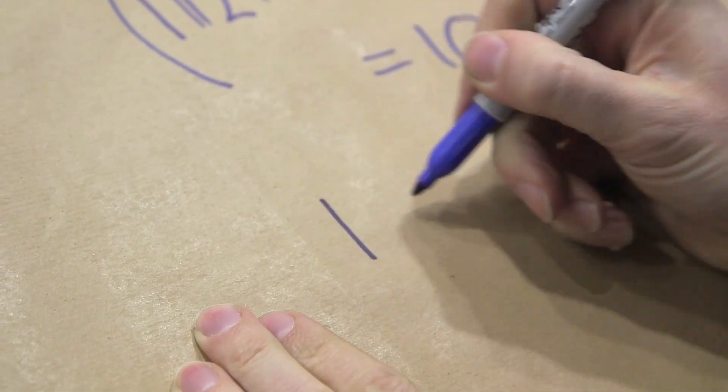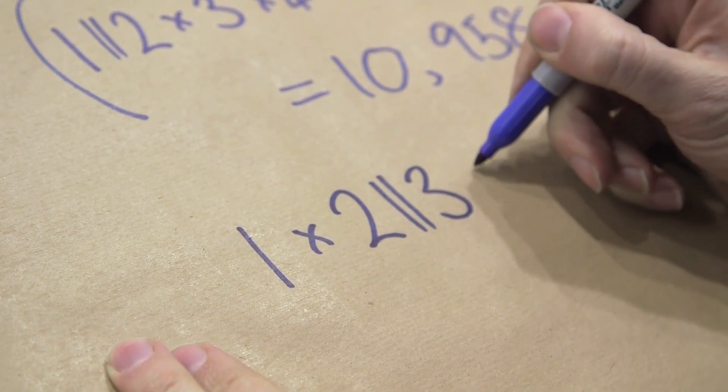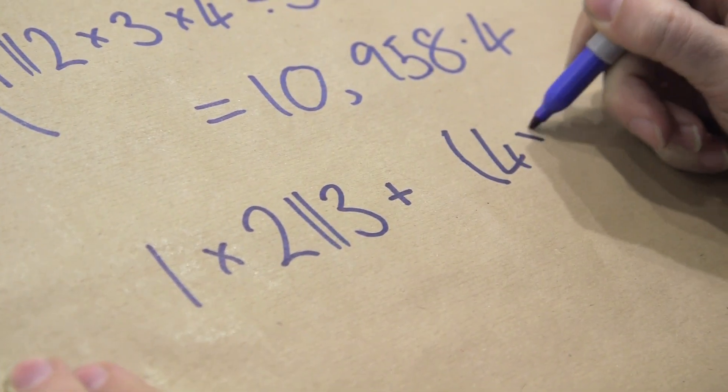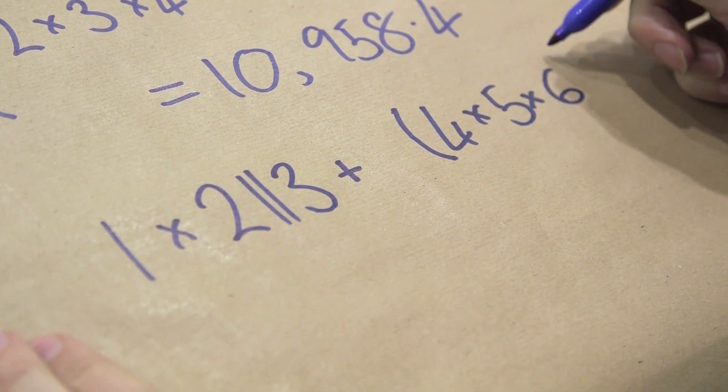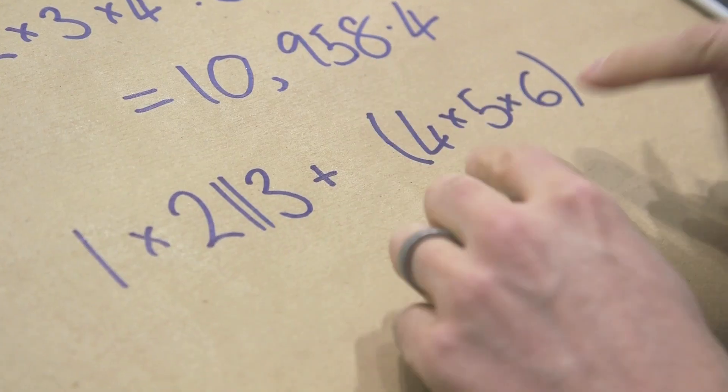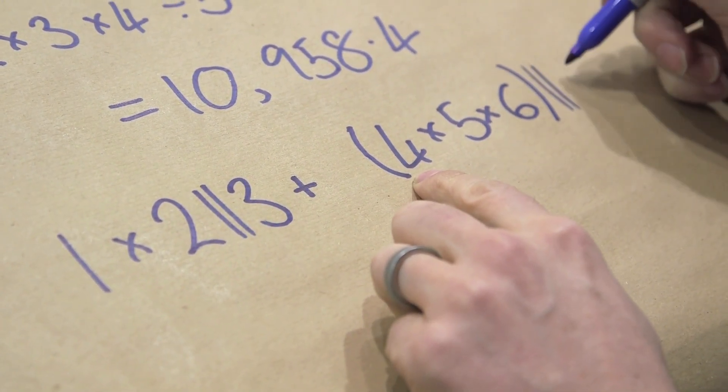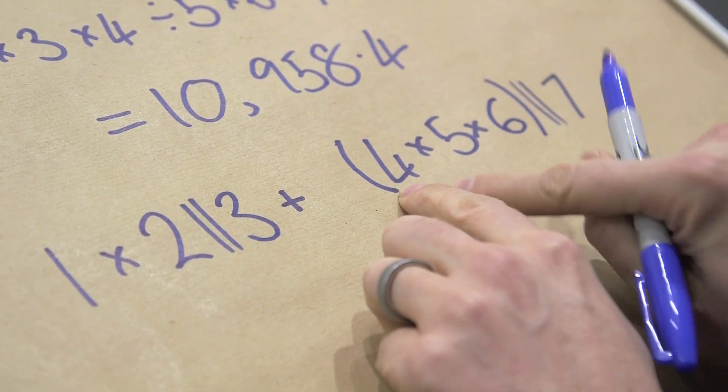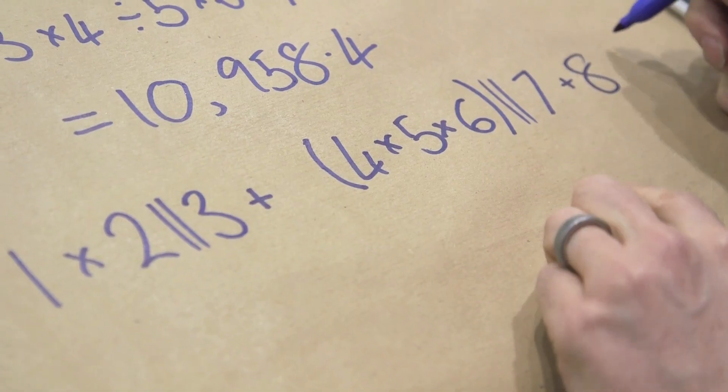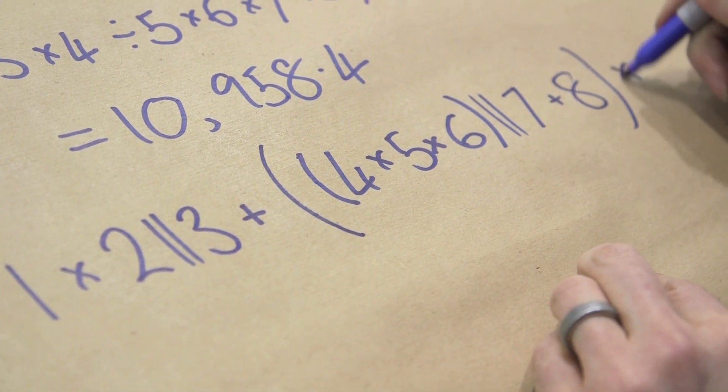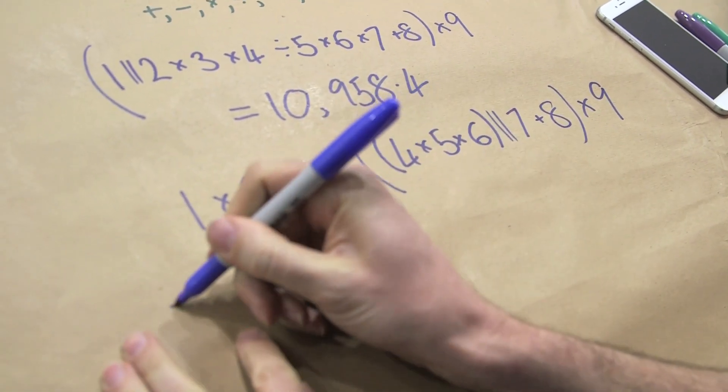And so I found 1 times 2, concatenated with 3, plus, in brackets, 4 times 5 times 6. And then that, so 4 times 5, just so you know we're going with this, that's going to be 20 times 6 is 120. But then 120 is concatenated with 7. So now you do the calculation first, and then you concatenate with another digit. Then you add on an 8, and that whole thing, you multiply by 9.